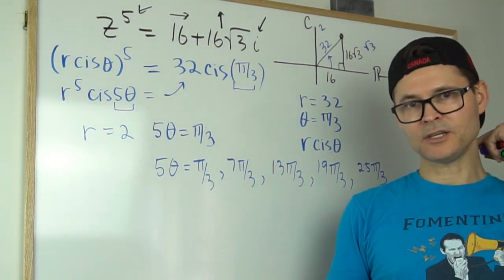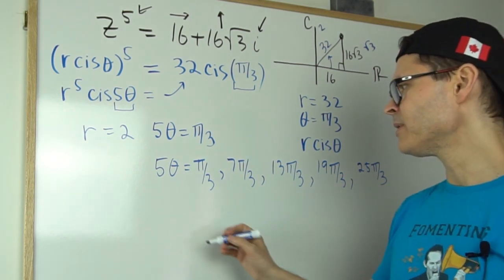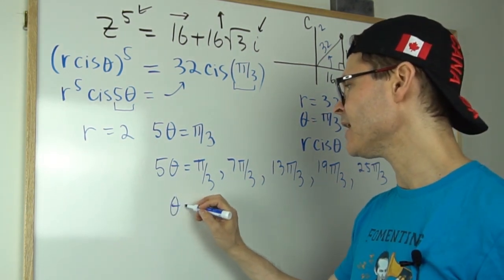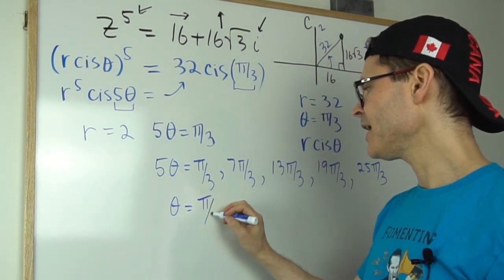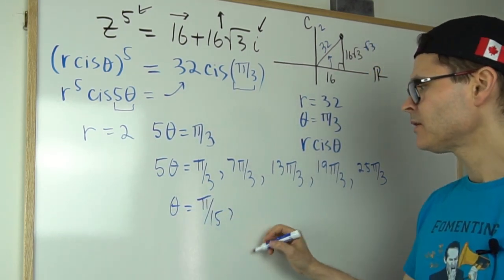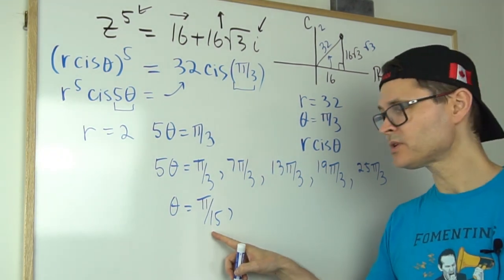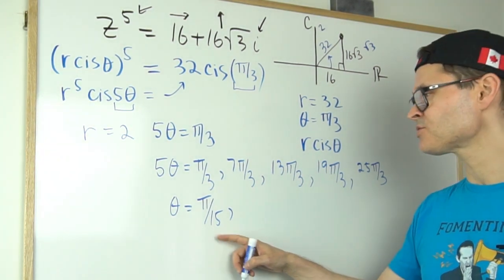That's what 5θ is equal to. And then I'll divide through by 5. And that means that θ is equal to π over 15. That's going to be for the first root. That will be the argument for the first root.